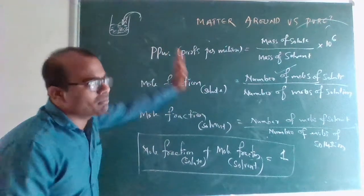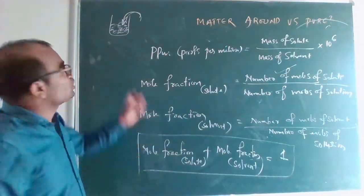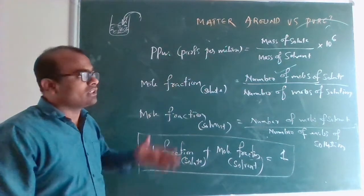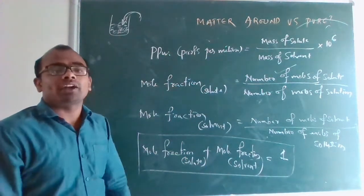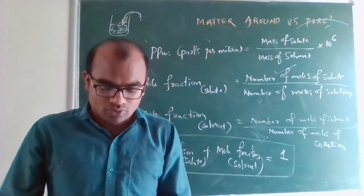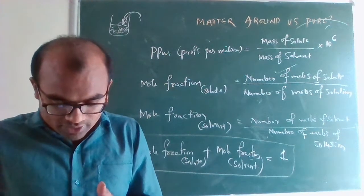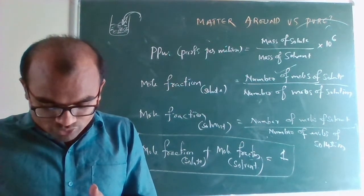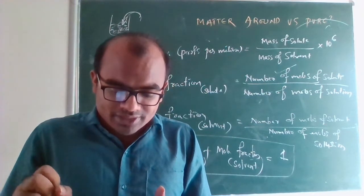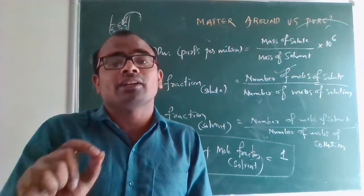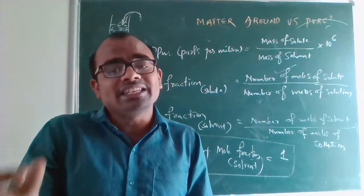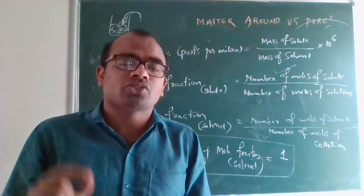In a suspension, the particle size is very large, so you can easily view the solute particles through the naked eye. In a solution you cannot view the solute particles with the naked eye, but in a suspension you can. Properties of suspension: a suspension is a heterogeneous mixture, and the solute particles are big, so we can easily see them with the naked eye.